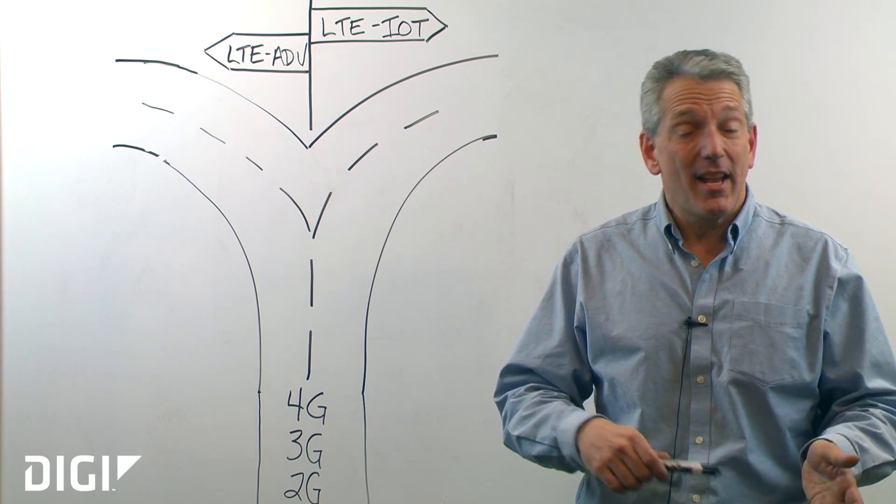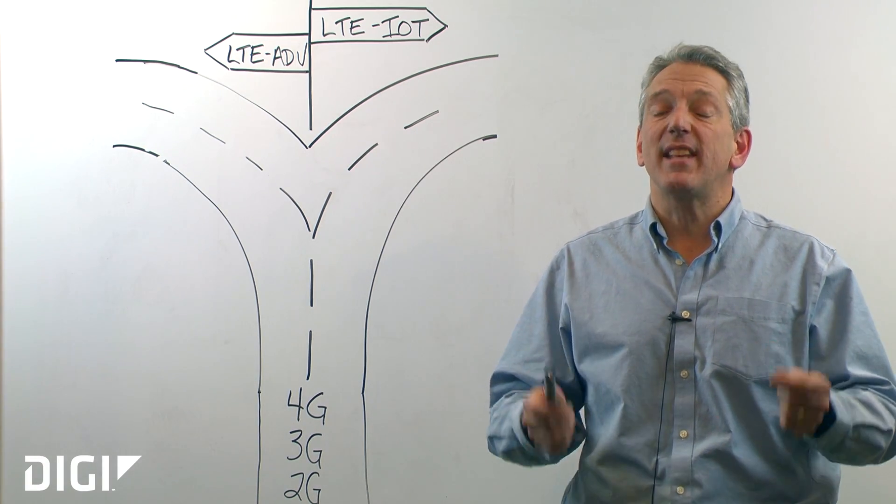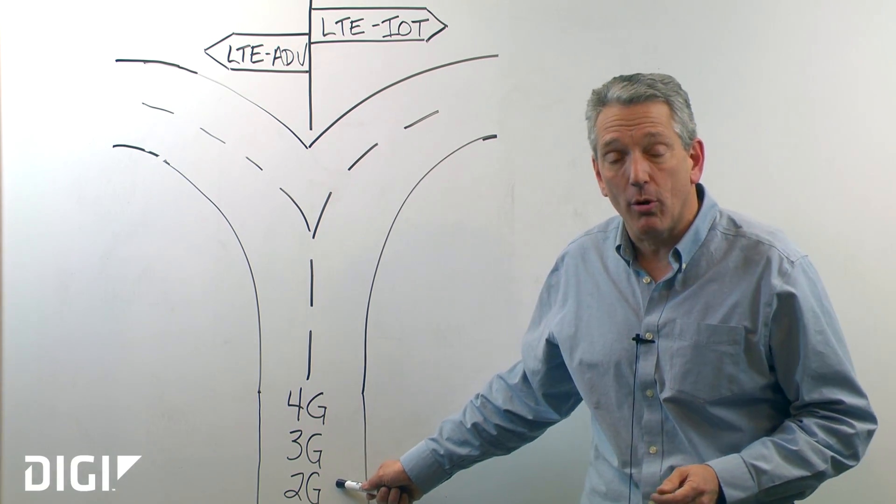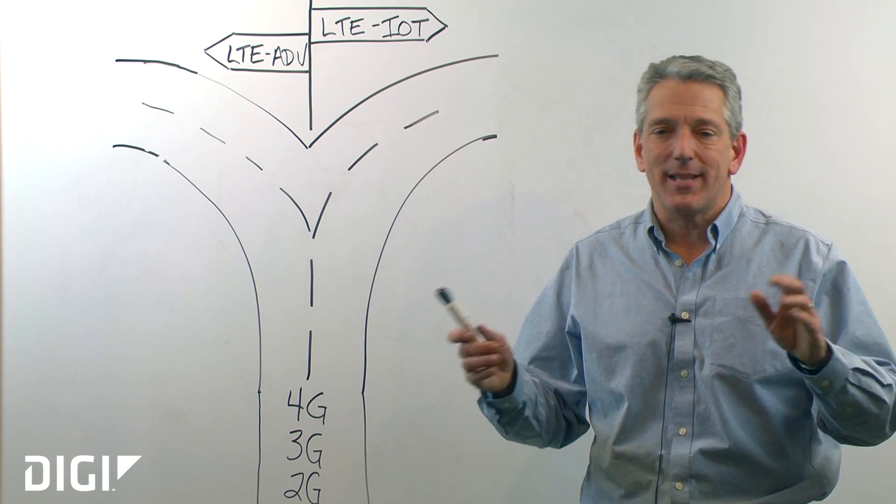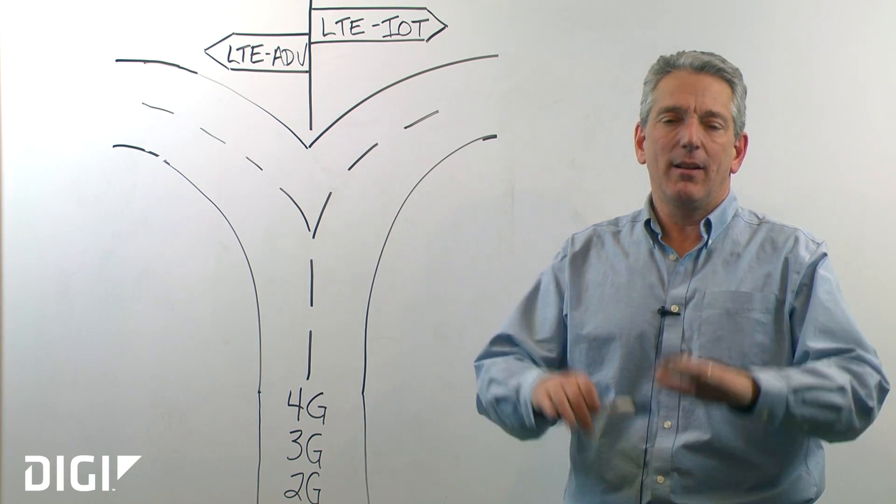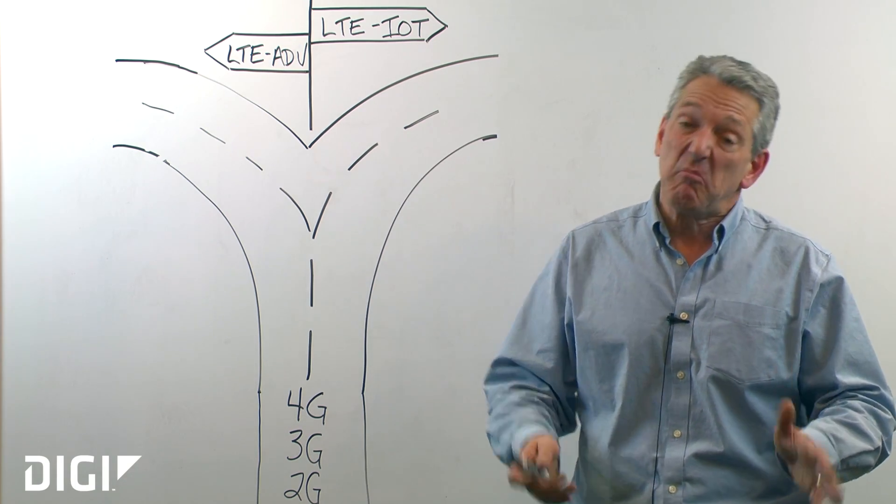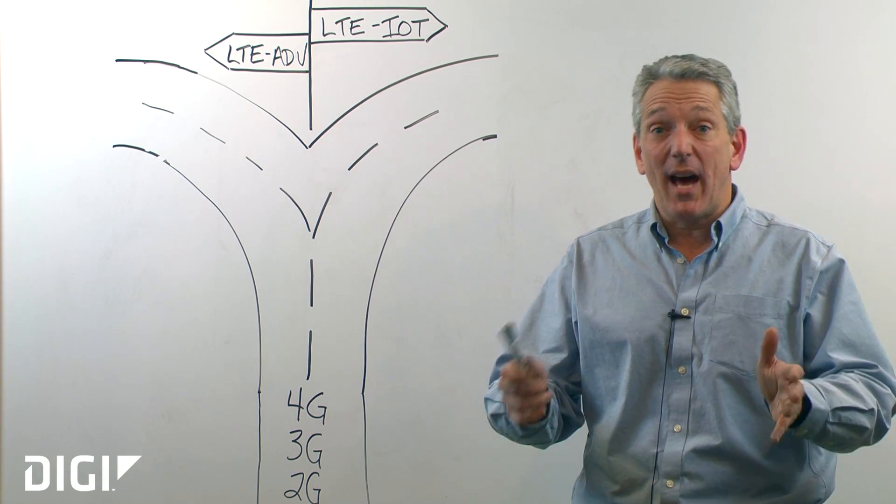Before, there was voice. After there was voice, we started sending data over our cellular connections, and 2G was born. 2G was some old technology called time division multiple access. Don't worry about what that means, but know that it wasn't fast enough. Fast for the time, but not fast enough.